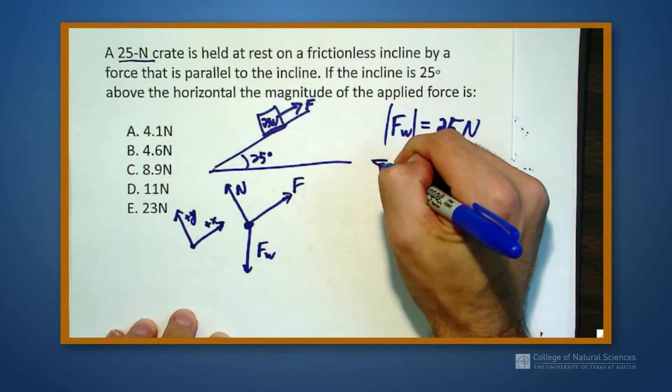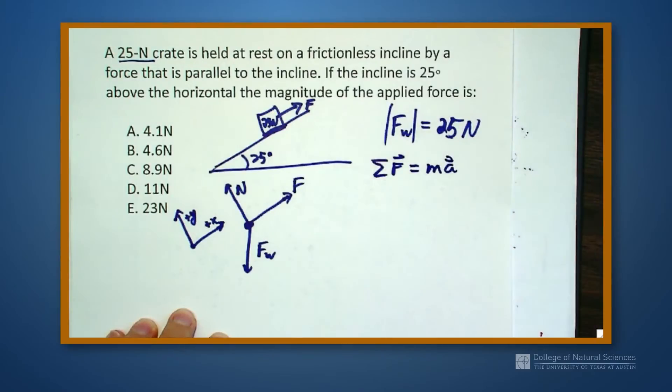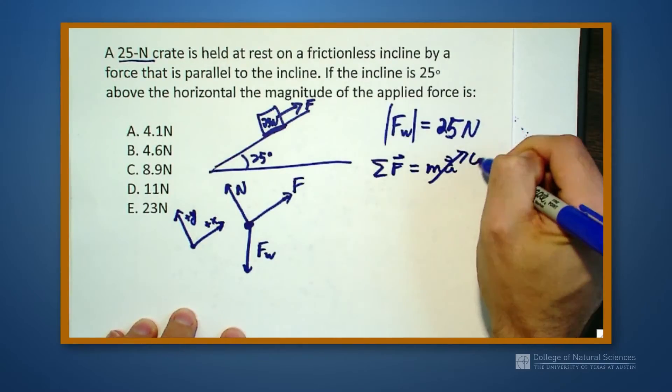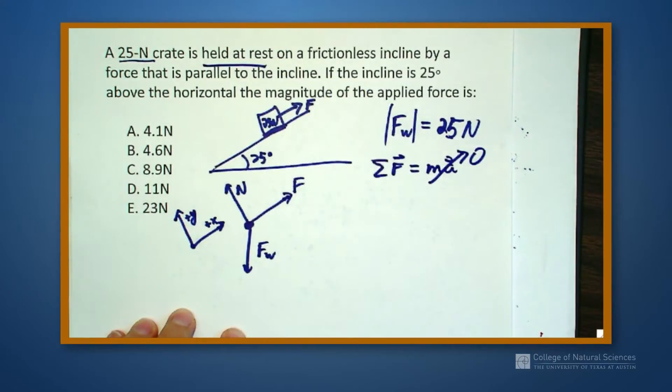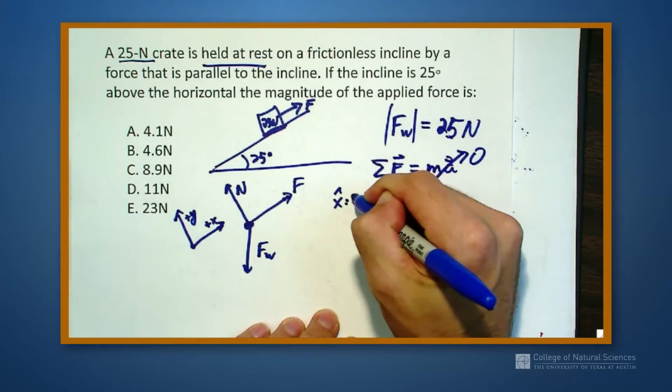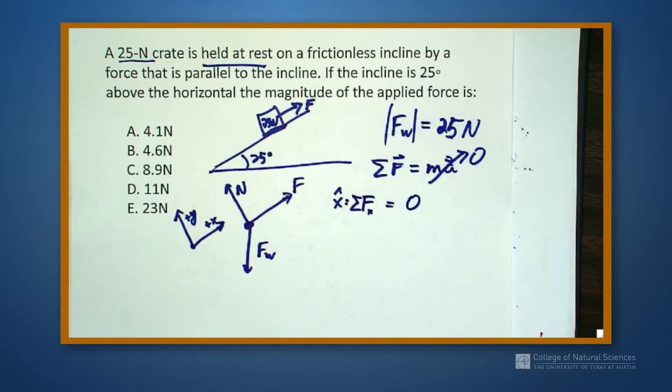So Newton's second law says that the net force gives me an acceleration. I know in this case my acceleration is zero because it's being held at rest. So I'm reading some other words into this problem and I'm going to see if I can't solve this problem using this. So now in the x direction I have to go through and figure out what my values are in my x direction.